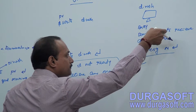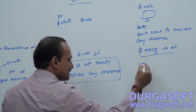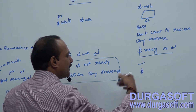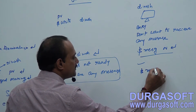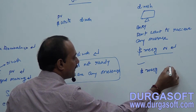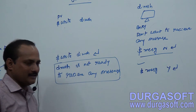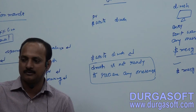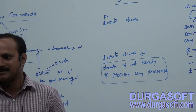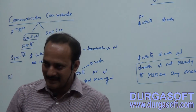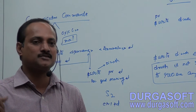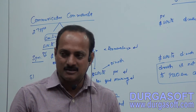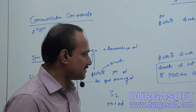If Dinesh wants to receive messages again after his work is over, he has to initiate the command 'mesg y' — meaning 'Yes, I am ready to receive messages.' In that case, anyone can send messages to Dinesh and they will be displayed directly on his system.